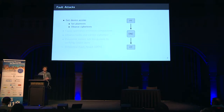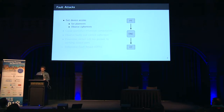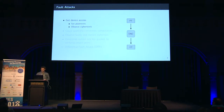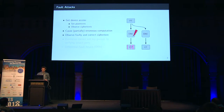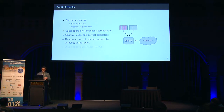I'd like to start with a quick introduction to fault attacks and countermeasures. In a fault attack, you have some kind of cryptographic implementation that you want to attack. As a first step, you want physical access so you can set plaintexts and observe ciphertexts. Then you induce a fault into the computation to observe a possibly erroneous ciphertext. You then collect a correct ciphertext for the same plaintext and determine parts of the key by guessing a subkey and verifying based on this faulty/correct ciphertext pair.